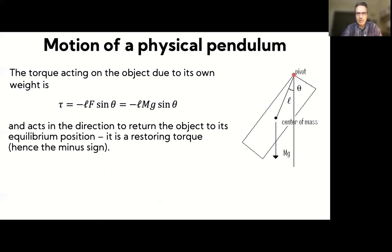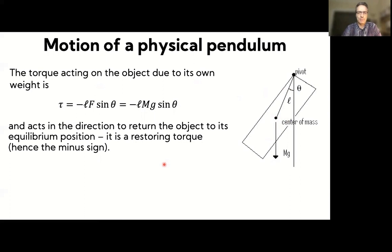The torque equals L — the distance from the pivot point to the center of mass — times the magnitude of the gravitational force, times the sine of the angle theta. There is a minus sign because this torque rotates the system back toward the equilibrium position. It is a restoring torque, which is why the minus sign is there.